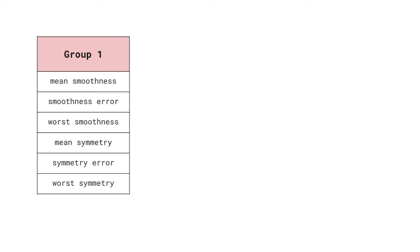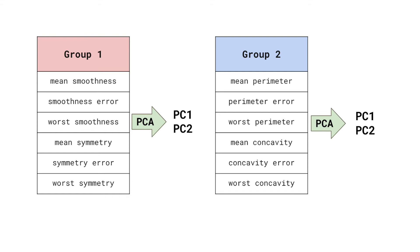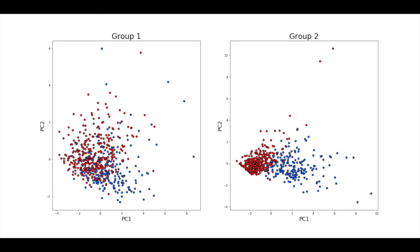This technique can be even more useful if we want to compare different sets of features. Let's create two subsets. In group 1, we have all the features based on symmetry and smoothness. Group 2 has all the features based on perimeter and concavity measures. We want to gain an understanding of which of these groups will be better predictors. To do this, we perform PCA on each group separately, giving us two sets of principal components. You can see the principal components for group 1 in the chart on the left and for group 2 on the right.